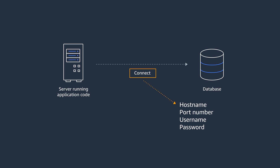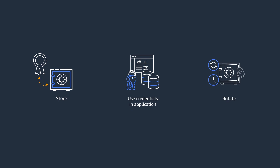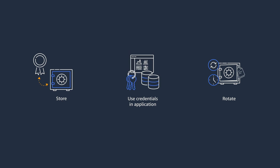Let's take a look at the architectural considerations first. There are a few things that you need to ask yourself. First, where do you store these secrets securely? Second, how does your application get access to these secrets? Third, how often do you rotate these secrets? And finally, when you rotate these secrets, how does your application know about the latest version of these secrets?